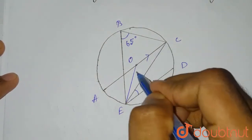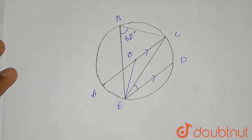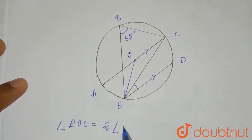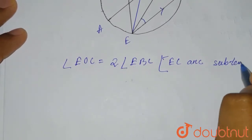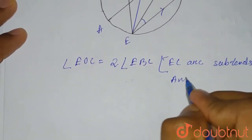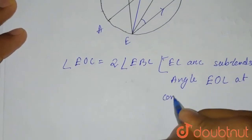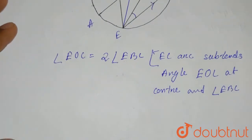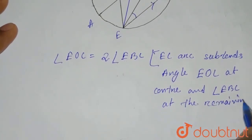First of all, if we consider arc EC, we can see that EC subtends angle EOC at the center and angle EBC at the remaining part of the circle. So we can write that angle EOC equals 2 times angle EBC, because arc EC subtends angle EOC at the center and angle EBC at the remaining part of the circle.